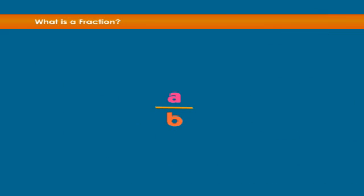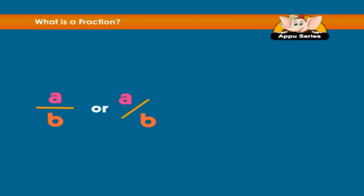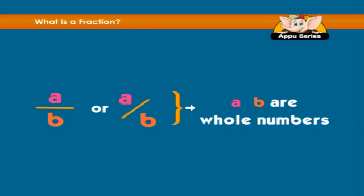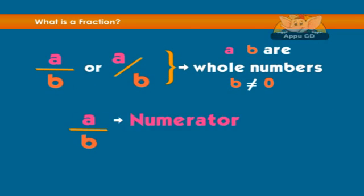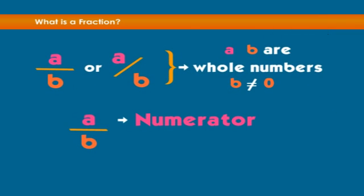Fractions are written in the form a over b or a slash b, where a and b are whole numbers and the number b is not zero. The number a is called the numerator and the number b is called the denominator.